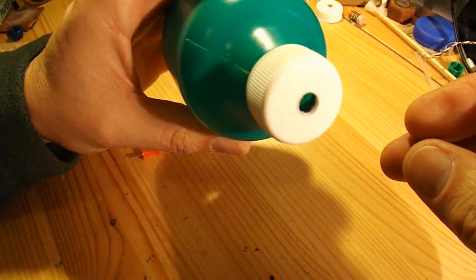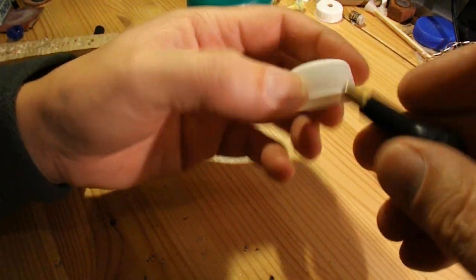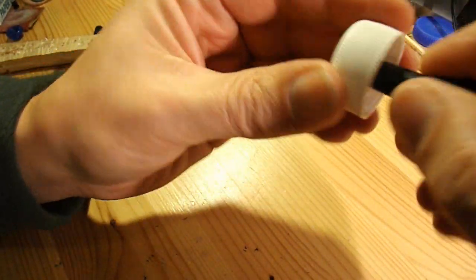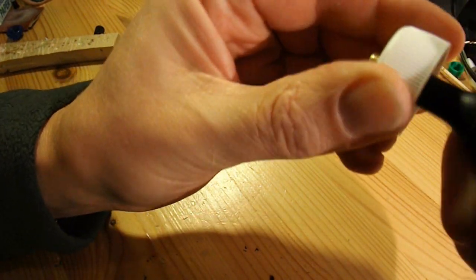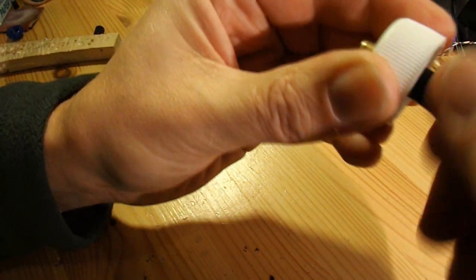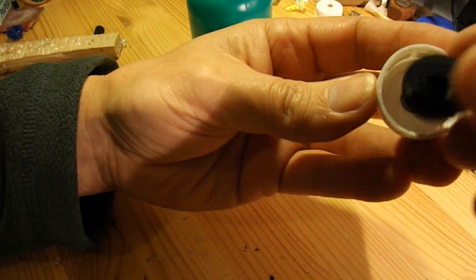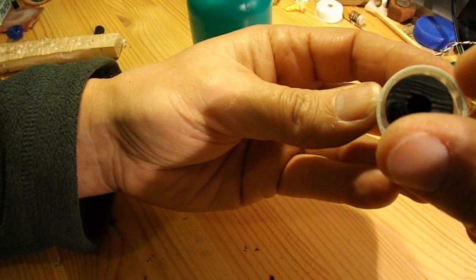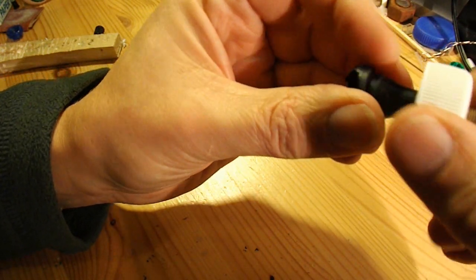This pop bottle cap happens to fit onto there nicely. I've drilled a hole in the top of it that's just the size that I can screw this valve into place. And what I'm going to do now is put lots of hot glue inside and just a little round the outside to try and seal it in place.